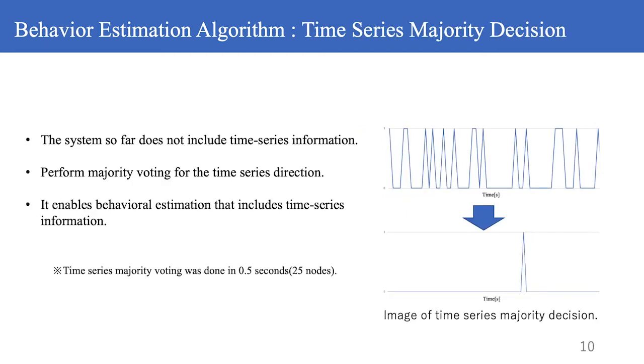Finally, there is a majority vote in the time direction. The system software has not been able to take into account the effect of the time direction. Therefore, by taking the majority vote in the time direction, we can estimate the behavior including the time direction information in the system. The image of the majority vote is shown in the figure on the right. In this case, since the behavior pattern is not changing so quickly, we took majority vote for 0.5 seconds.